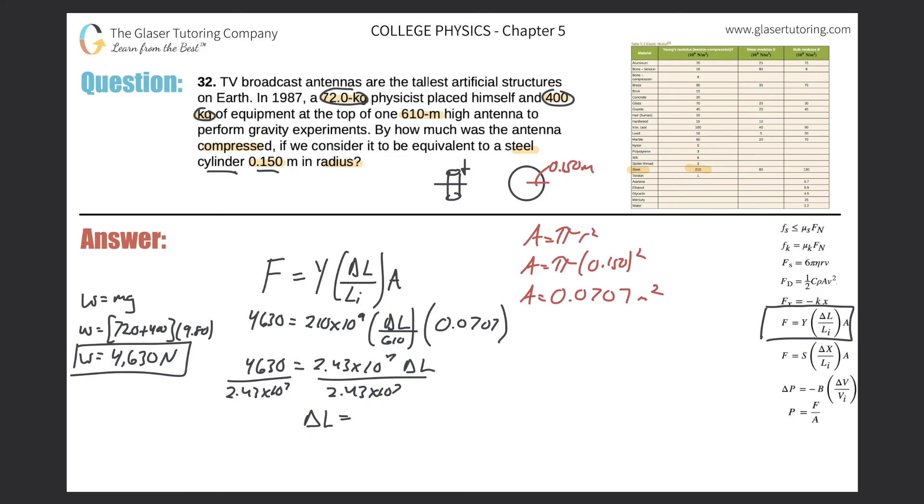And we get a value of 1.91 times 10 to the negative 4 meters. So that's how much the antenna would have compressed by.